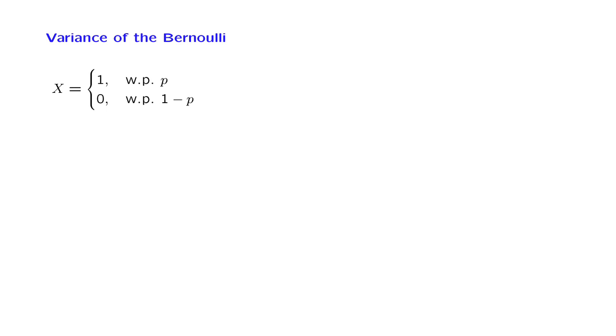In this segment, we will go through the calculation of the variances of some familiar random variables, starting with the simplest one that we know, which is the Bernoulli random variable. So let x take values 0 or 1, and it takes a value of 1 with probability P. We have already calculated the expected value of x, and we know that it is equal to P. Let us now compute its variance.